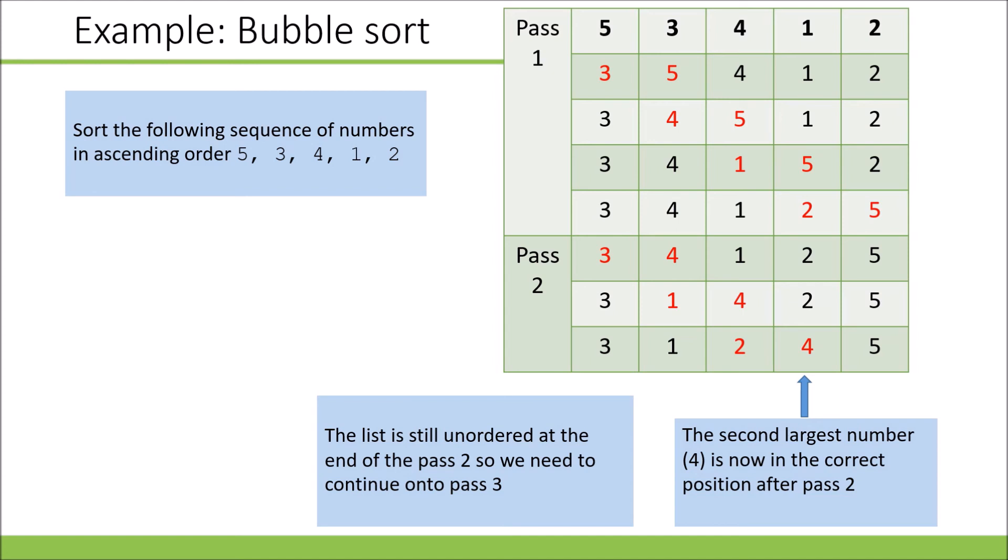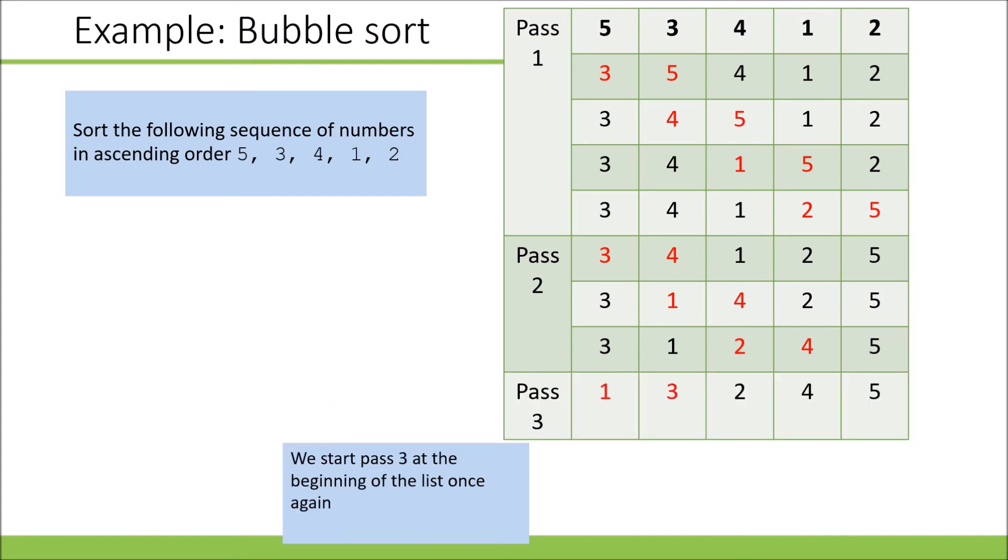The list is still unordered, so we need to do a third pass. We compare three and one at the start of the list and swap those around, giving us one and three. We then compare three and two and swap those around. Now our list is sorted.